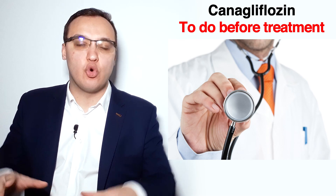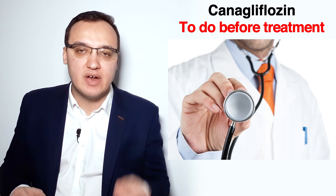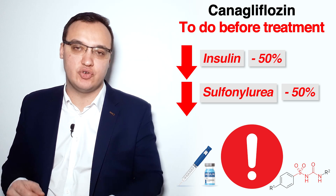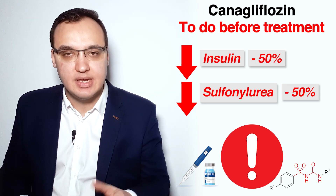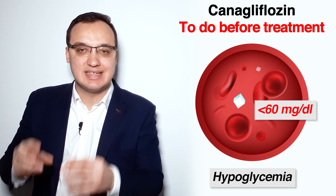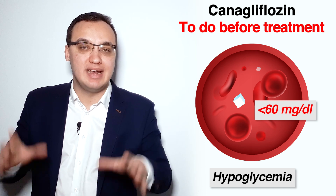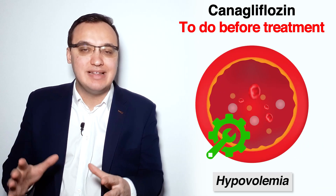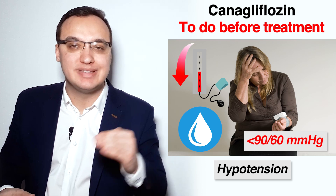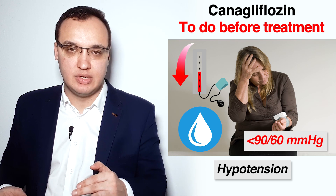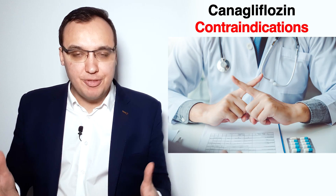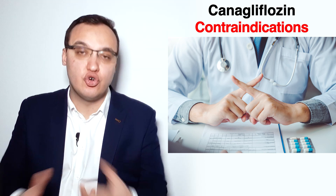Before starting Canagliflozin or any SGLT2 inhibitor, it is important to reduce the dose of Insulin or Sulfonylurea if the patient is already taking either of these medications. The reason is the risk of developing hypoglycemia, which is a blood glucose level less than 60 mg per deciliter. It is also very important to correct any hypovolemia if present, since SGLT2 inhibitors like Canagliflozin can cause hypotension due to increased water secretion.